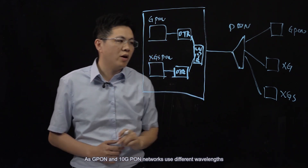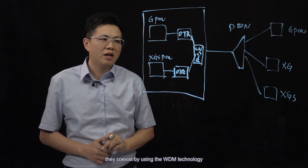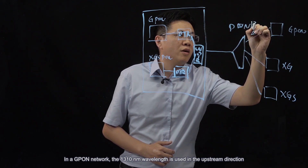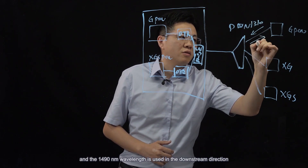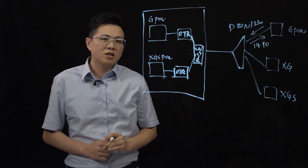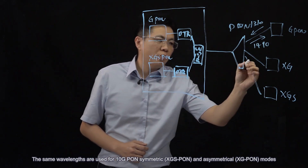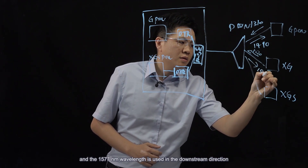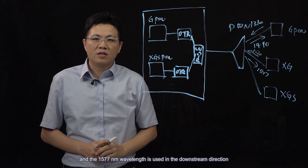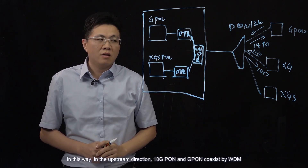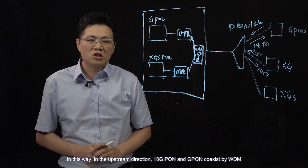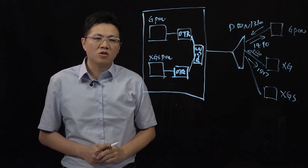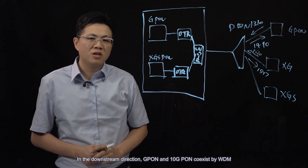As GPON and 10G PON networks use different wavelengths, they coexist by using the WDM technology. In a GPON network, the 1310 nm wavelength is used in the upstream direction, and the 1490 nm wavelength is used in the downstream direction. For 10G PON symmetric and asymmetrical modes, the 1270 nm wavelength is used upstream and the 1577 nm wavelength is used downstream. In the upstream direction, 10G PON and GPON coexist by WDM, and 10G PON asymmetrical and symmetric modes coexist by time division. In the downstream direction, GPON and 10G PON coexist by WDM.